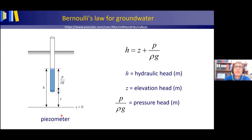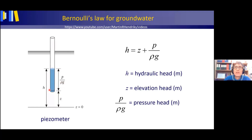Groundwater can only flow into the piezometer through the screen at the bottom. The hydraulic head is therefore measured at the location of the piezometer screen. z is the altitude of the screen above the reference level in meters, p/(ρg) is the water pressure above the screen in meters, and by adding z and p/(ρg) together, we obtain the hydraulic head in meters — the total energy as a length unit at the position of the screen.